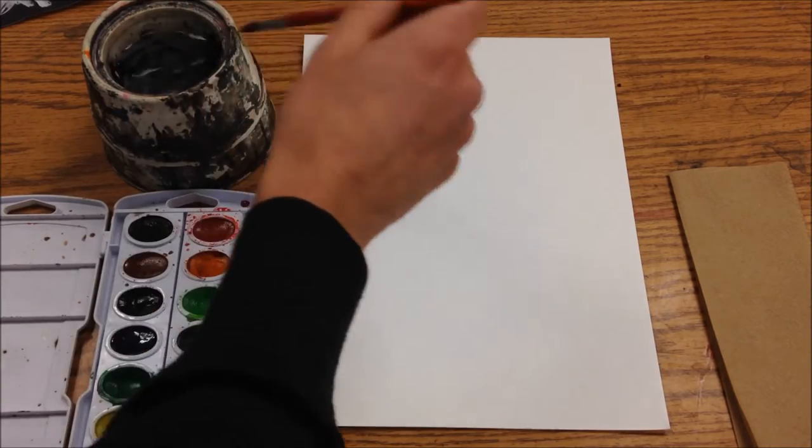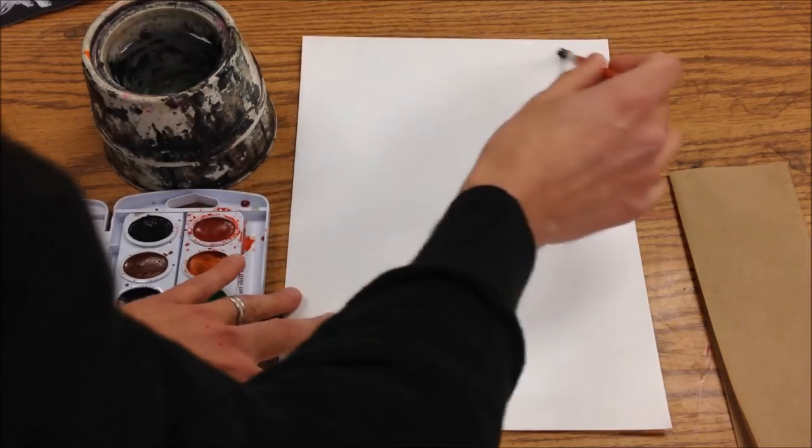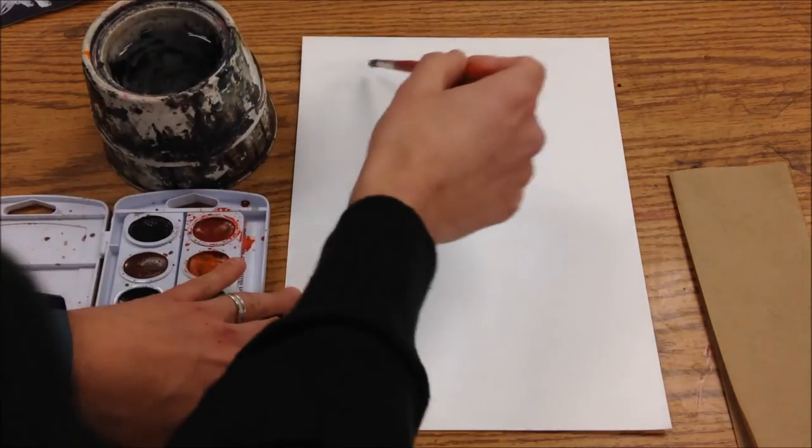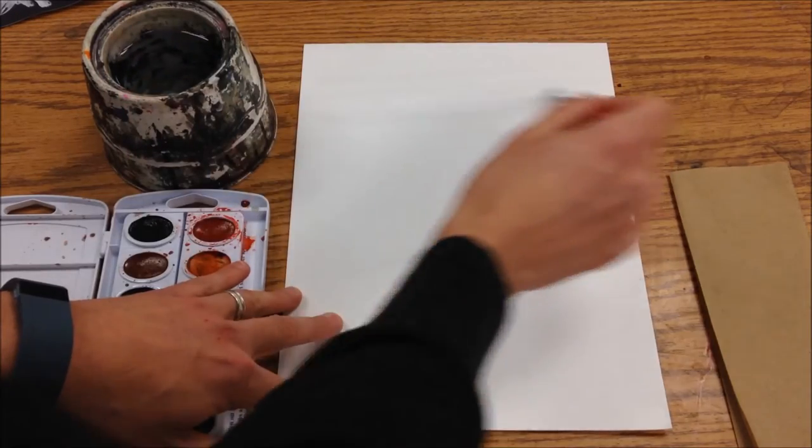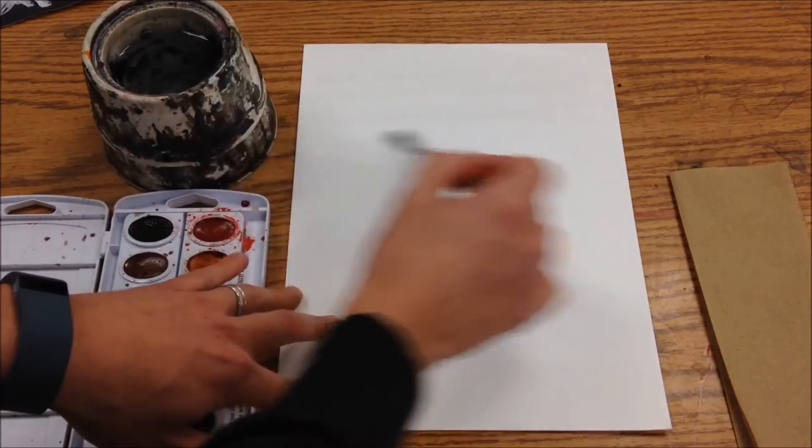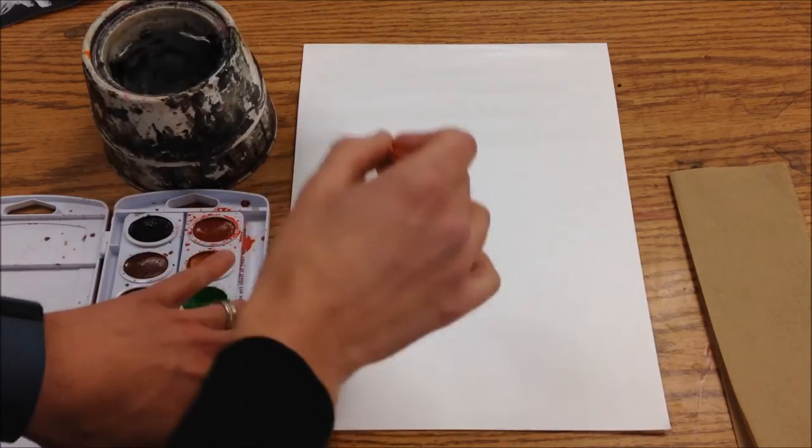So I'm just going to get my brush wet. Ideally you want a bigger brush than this. This is what we got on hand. I'm just going to gently soak the paper up using horizontal lines because that's kind of what we want.